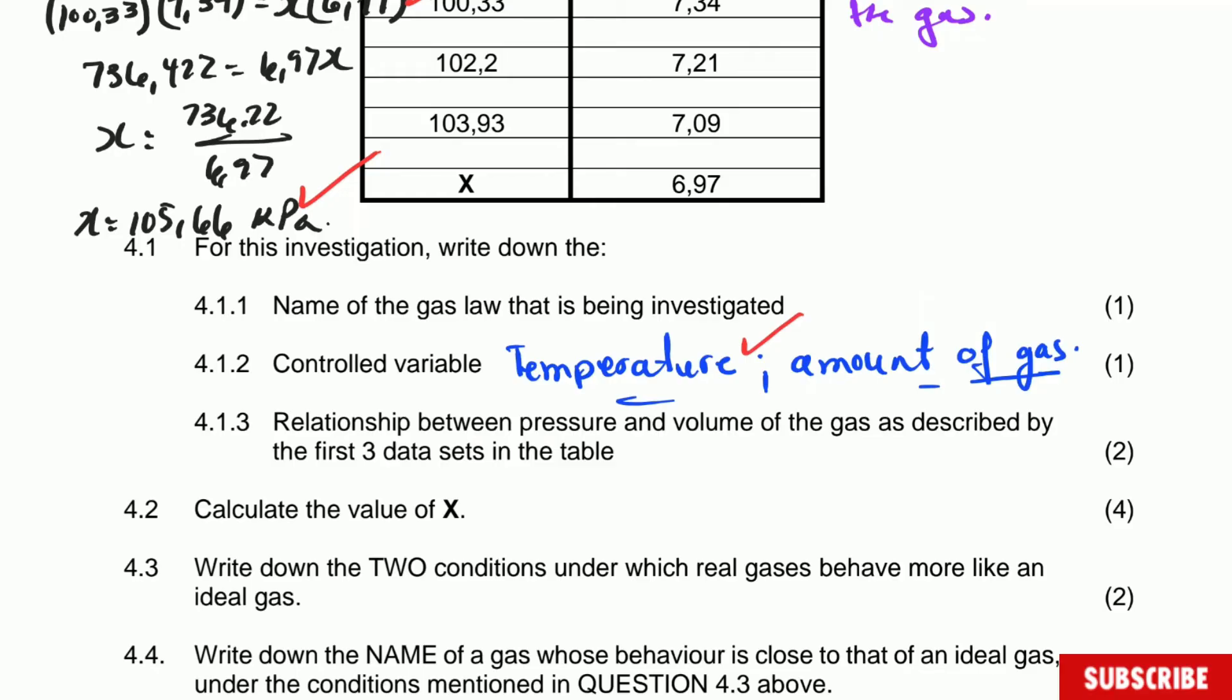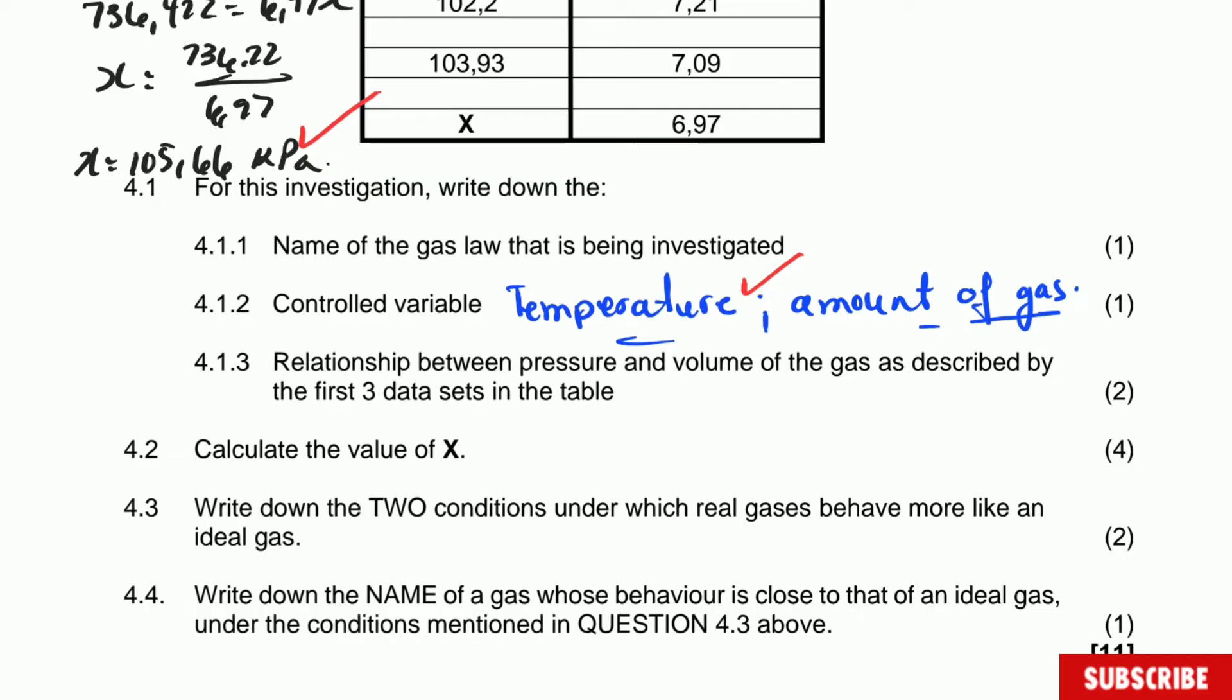Write down the two conditions under which real gases behave more like an ideal gas. That will be the opposite of when the real gas and the ideal gas cannot be considered real. The answer: first of all, the temperature must be high. High temperature and low pressure.